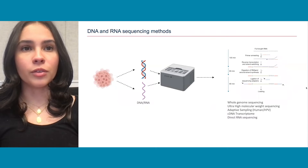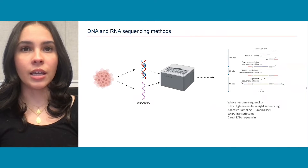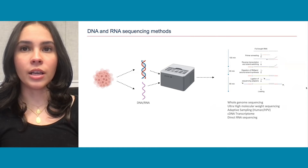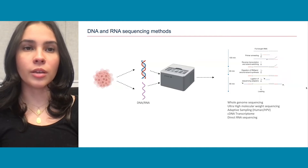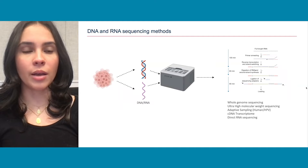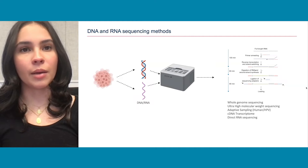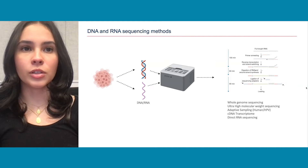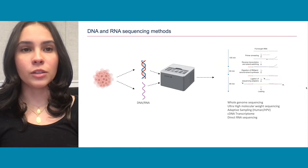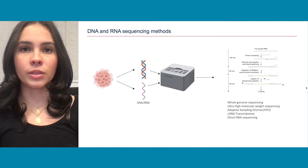The methods used were either for tumor or direct cell lines. We obtained the DNA or RNA, and then used that on the GridION to get direct RNA long-read sequencing. Different methods were also used: whole genome sequencing, ultra-high molecular weight sequencing, adaptive subsampling, cDNA transcriptome, and direct RNA sequencing. These reads were then viewed on IGB to further look into each cell line, HPV type, and possible integration.